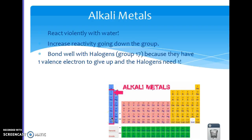These guys really like to bond with the halogens, group 17, because they only have one valence electron, and the halogens need one valence electron, so they make a great pair.